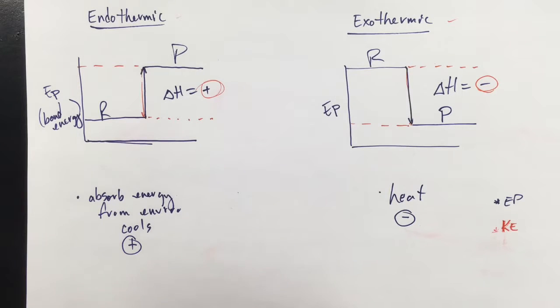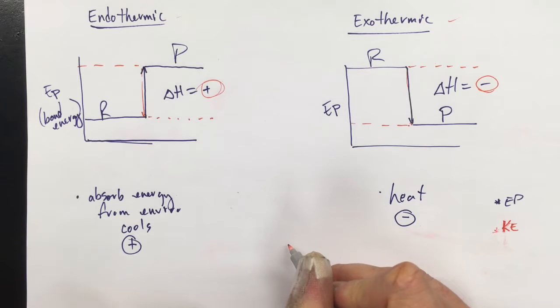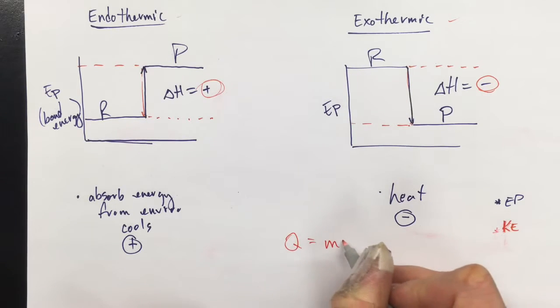Hopefully this helps you understand how those two things are related. And you'll remember that Q equals MC delta T. This is measured using a calorimeter.